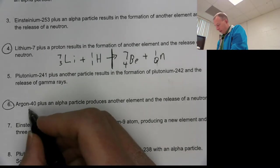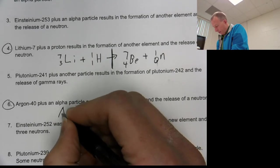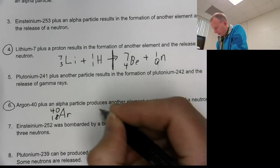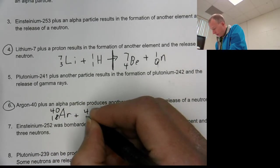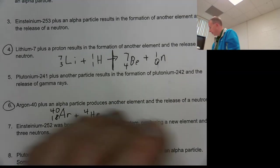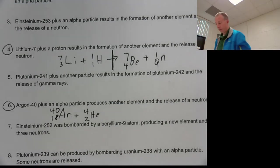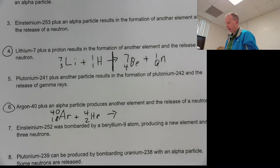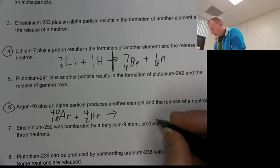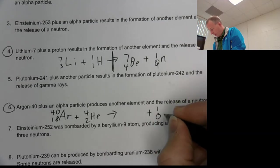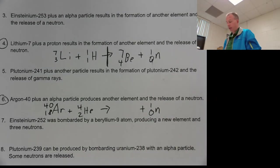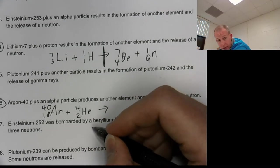So let's do this last one. So argon-40, argon's atomic number is 18 off of the periodic table, plus an alpha particle. So 4, 2, helium. If you're not sure, again, look it up on the chart that I've been showing you. It says that will produce another element and it will result in the release of a neutron. So we are going to have a neutron. And then we are going to produce another element. So what do we get here?